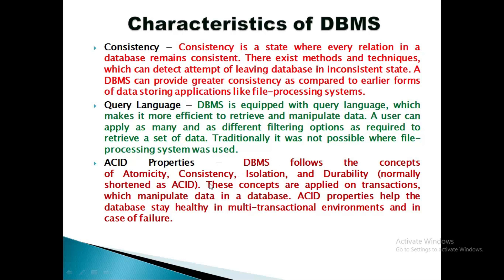ACID Properties is very important in DBMS. DBMS follows the concepts of Atomicity, Consistency, Isolation, and Durability — normally shortened as ACID properties. These concepts are applied on transactions which manipulate data in the database. ACID properties help the database stay healthy in multi-transaction environments and in cases of failure. These four properties are applied to every transaction in any database. In a multi-transactional environment, such as a banking system, ACID properties help secure data and reduce the chances of failure.